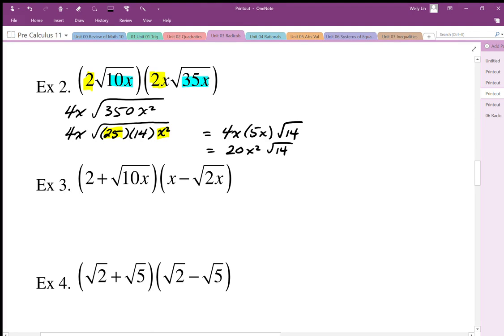For Example 3, there are pluses in here, so we have to make sure we distribute. So we end up with 2 times x minus 2 times square root 2x. The inside is going to be plus square root 10x.